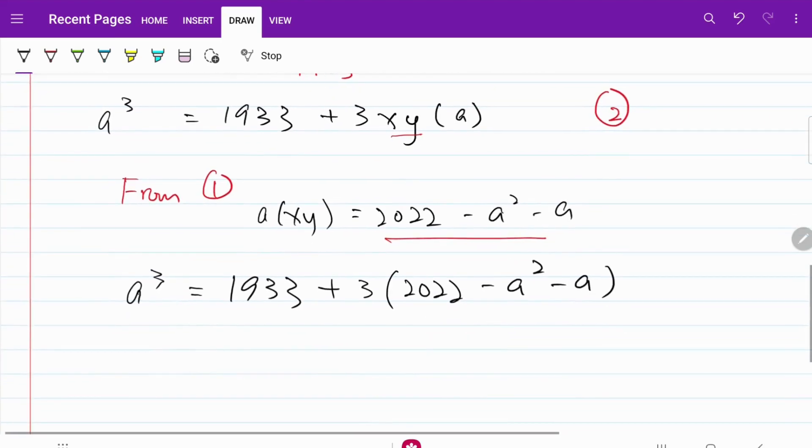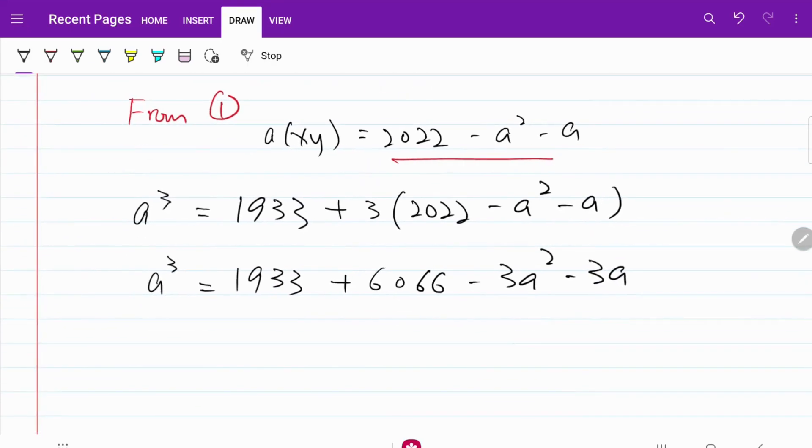From here, what I have is a cubed is equal to 1933 plus 6066 minus 3a squared minus 3a. If I push everything to the right hand side,